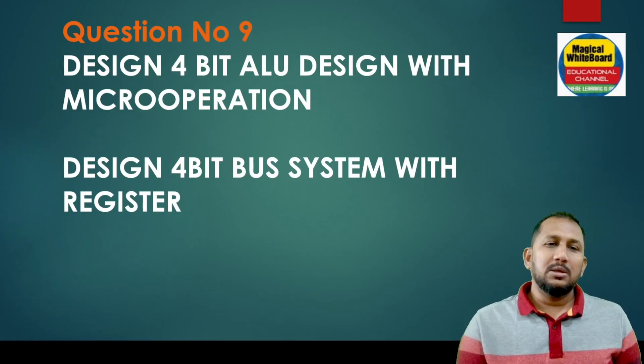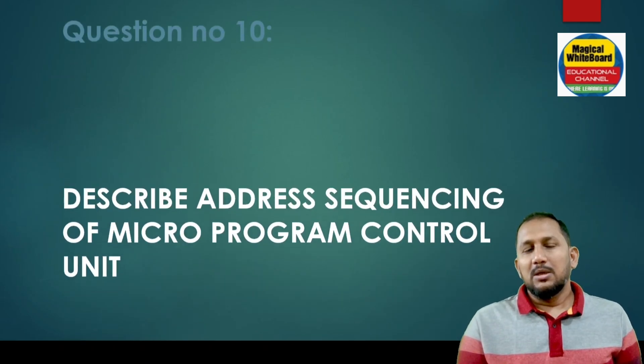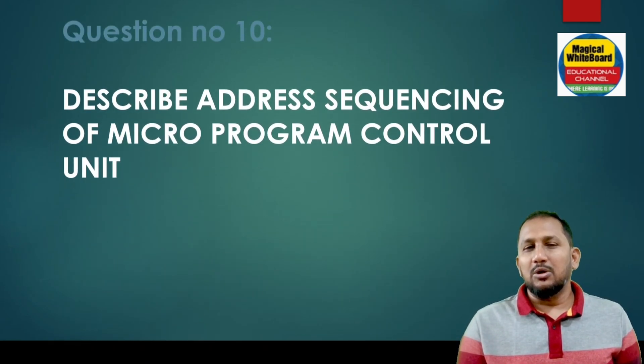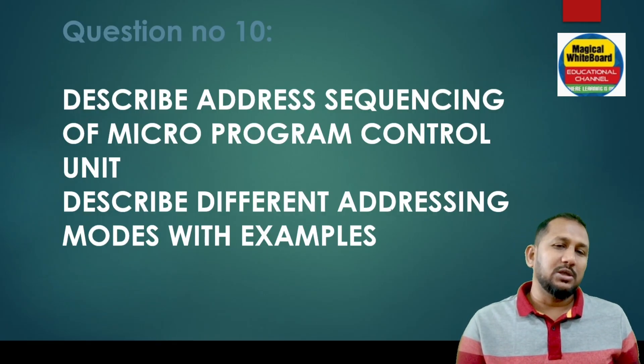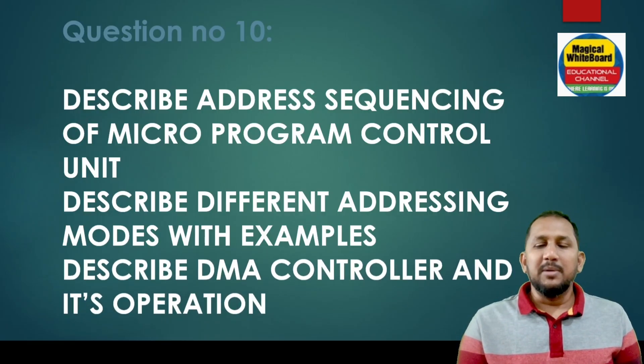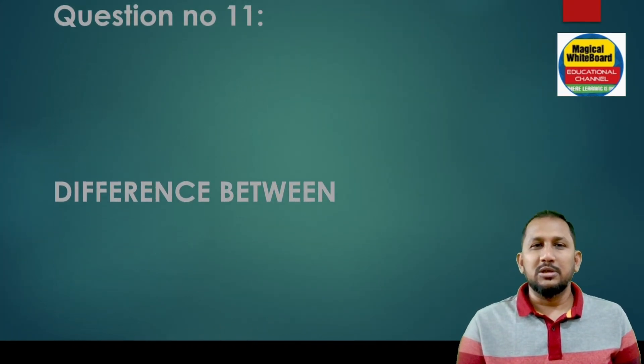Next question: 4-bit bus system with registers. Flow chart for addition, subtraction. Question number 10: address sequencing or microprogram control unit. Different addressing modes with example. DMA controller and its operation. Question number 10, short questions, important questions.